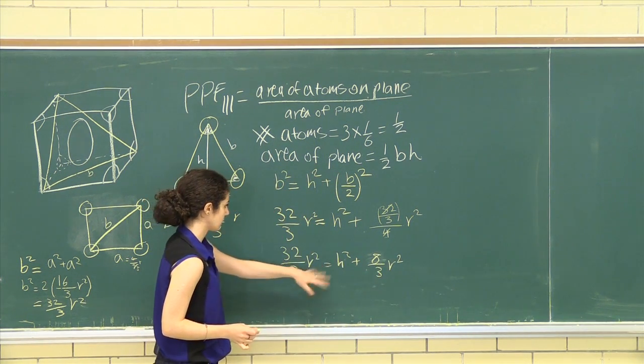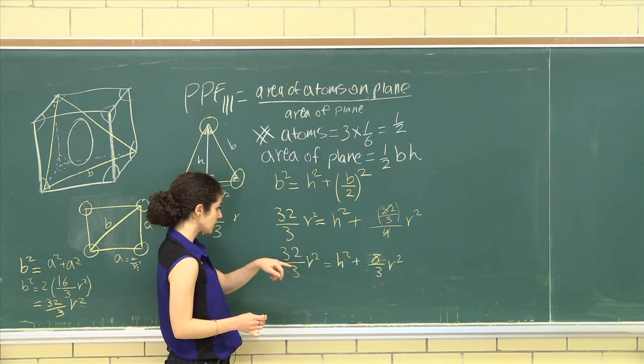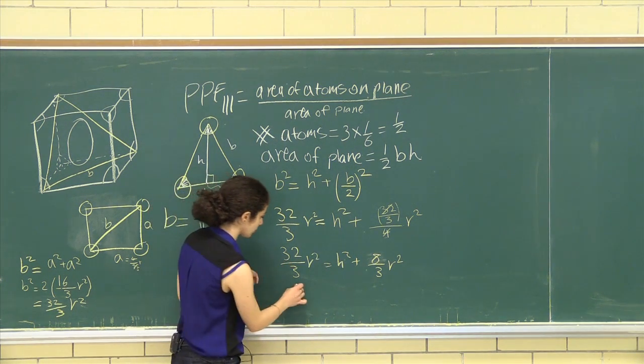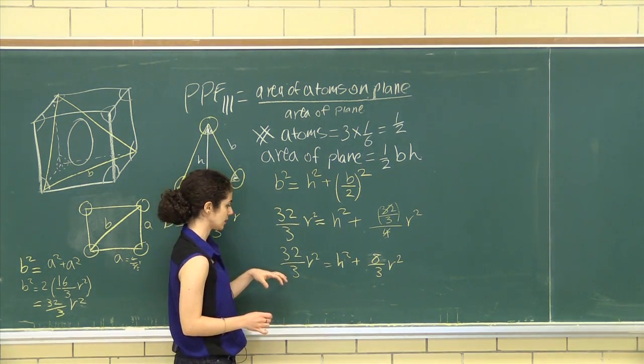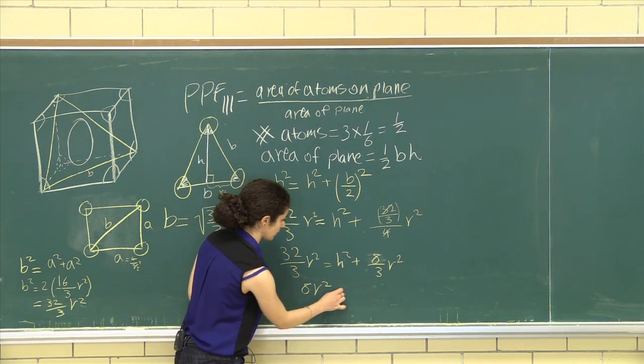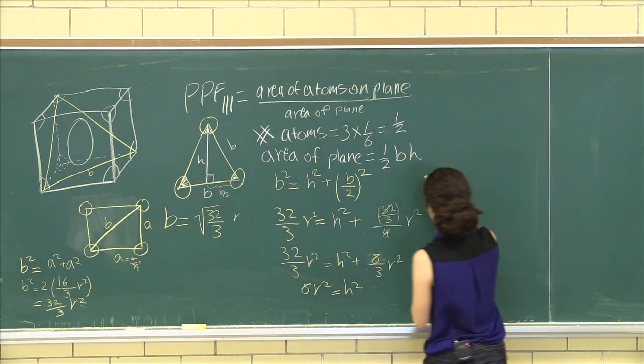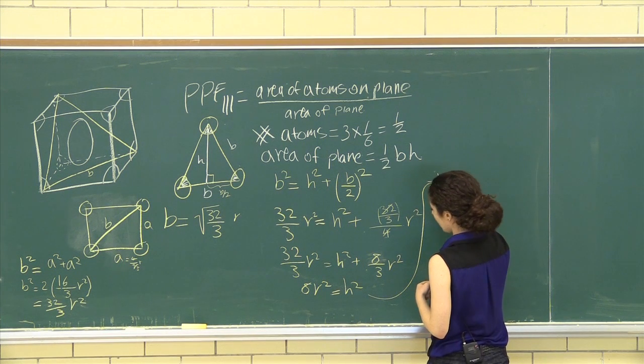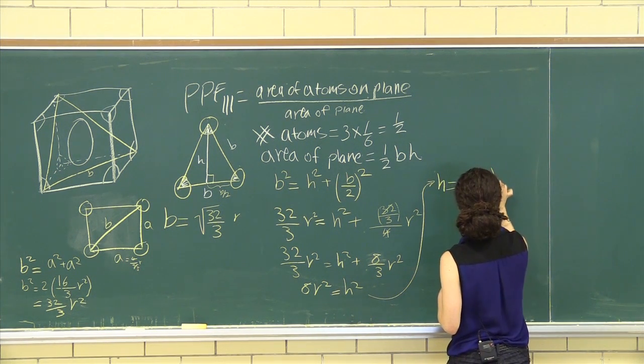And let's put this to the other side. So 32 minus 8 is 24 over 3. 24 over 3 is 8. So 8, R squared is equal to H squared. H is equal to 2 root 2, R.